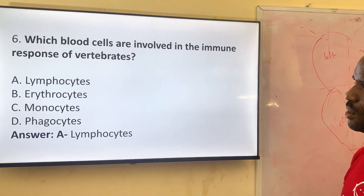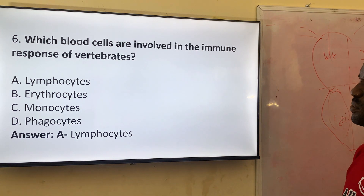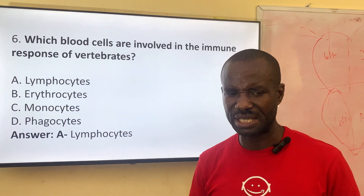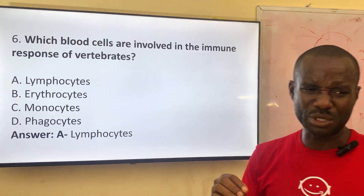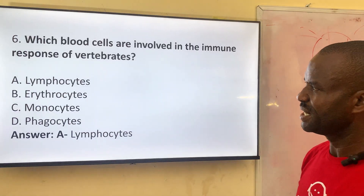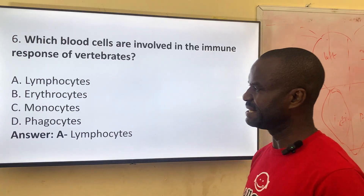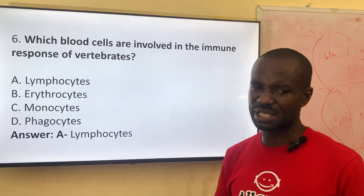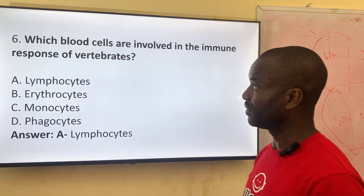Number six: which blood cells are involved in the immune response of vertebrates? We have red blood cells, white blood cells, lymphocytes and so on, but some are responsible for immunity. Option A: lymphocyte. Option B: erythrocyte. Option C: monocyte. Option D: phagocyte. The correct answer is the lymphocyte — they are responsible for building the immune system in any living organism.